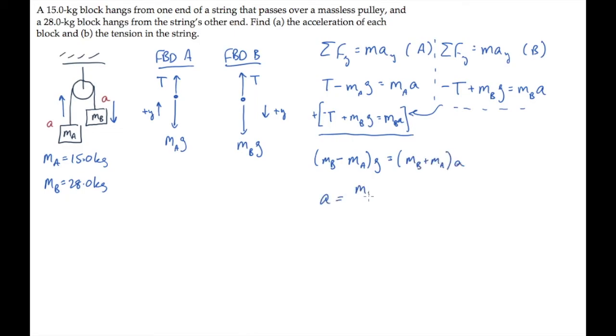Solve this for the acceleration a and substitute values. The difference in the masses is 13 kilograms, and the sum is 43 kilograms. Multiply by the acceleration of gravity, g, to find the acceleration of each block is 2.96 meters per second squared.